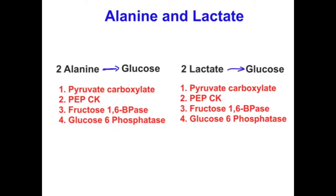For conversion of two lactate into glucose, you need the same four enzymes required for alanine: pyruvate carboxylase, PEPCK, fructose-1,6-bisphosphatase, and glucose-6-phosphatase. Basically, the same set of important enzymes is needed for both alanine and lactate to enter gluconeogenesis and produce glucose.